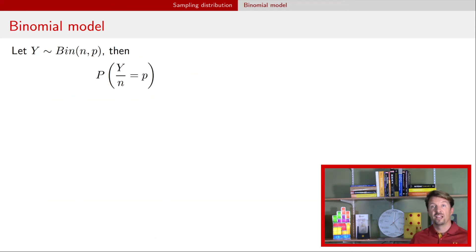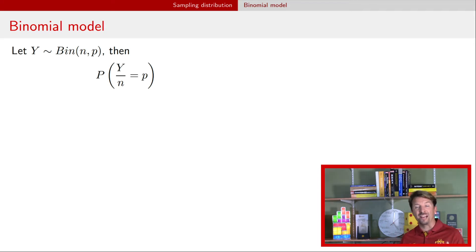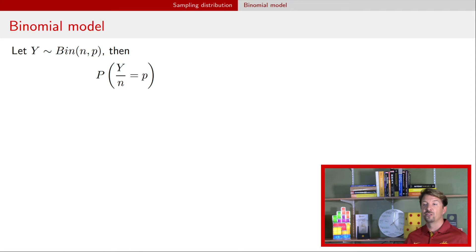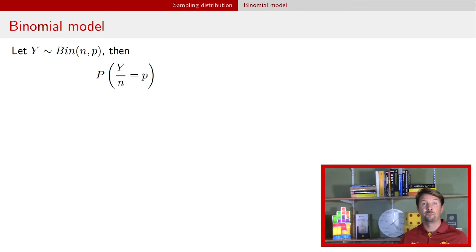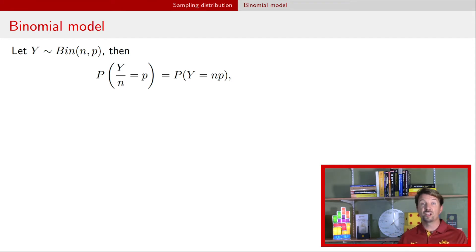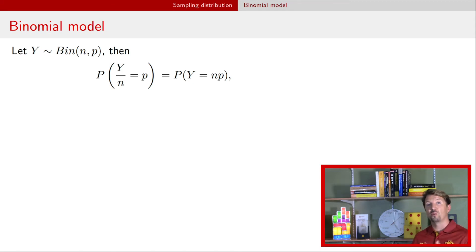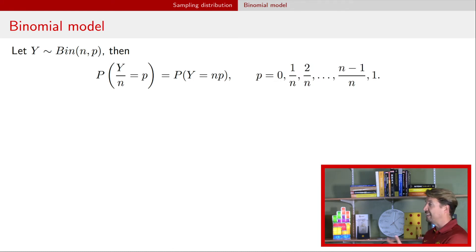For the binomial model, we look at the sample proportion y divided by n, and we think about what the probability mass function is for that ratio, where y is random. We know y ranges between 0 and n, so the proportion can equal some value p. Multiplying both sides by n gives the probability that y equals n times p. The support of this ratio y over n consists of the values 0, 1/n, 2/n, 3/n, and so forth, all the way up to 1.